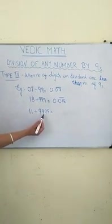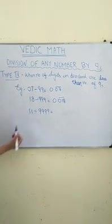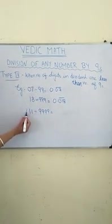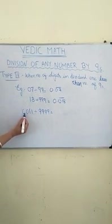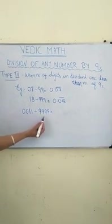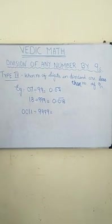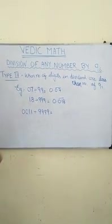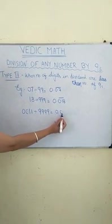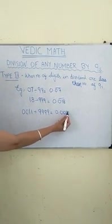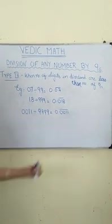Alright. Here we have 4 times 9, only 2 digits are here. So what do we do? We add two 0s at front. So now digits are 4 and 4, equal digits are there. So this is the concept we are following here. So your answer is going to be 0.0011 with a bar. That's it.